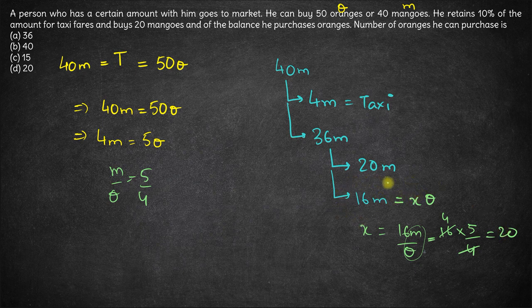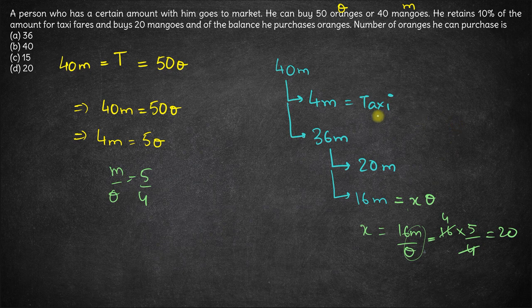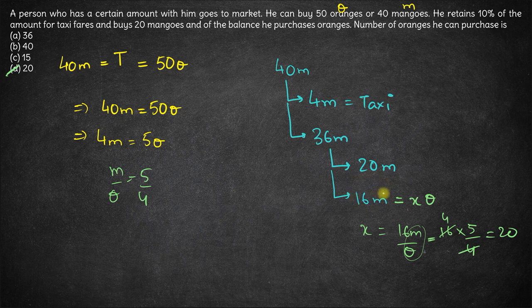So with the remaining amount, he can buy 20 oranges. Option D here is the right answer.